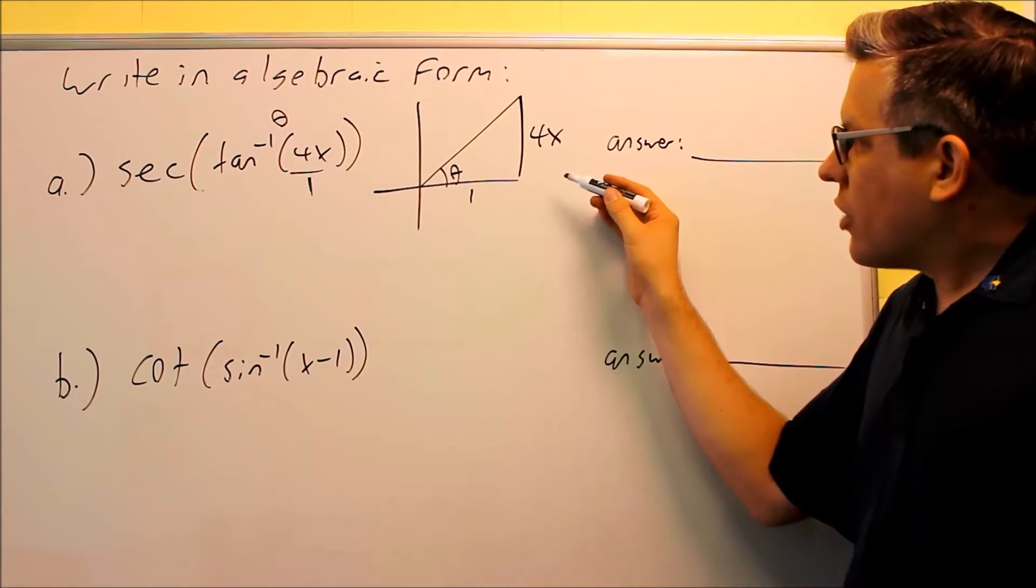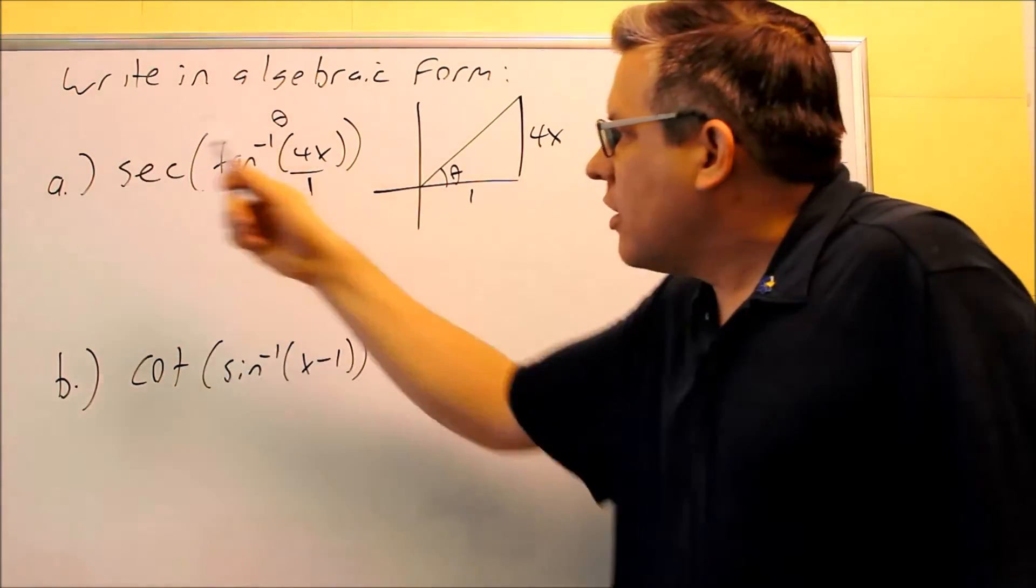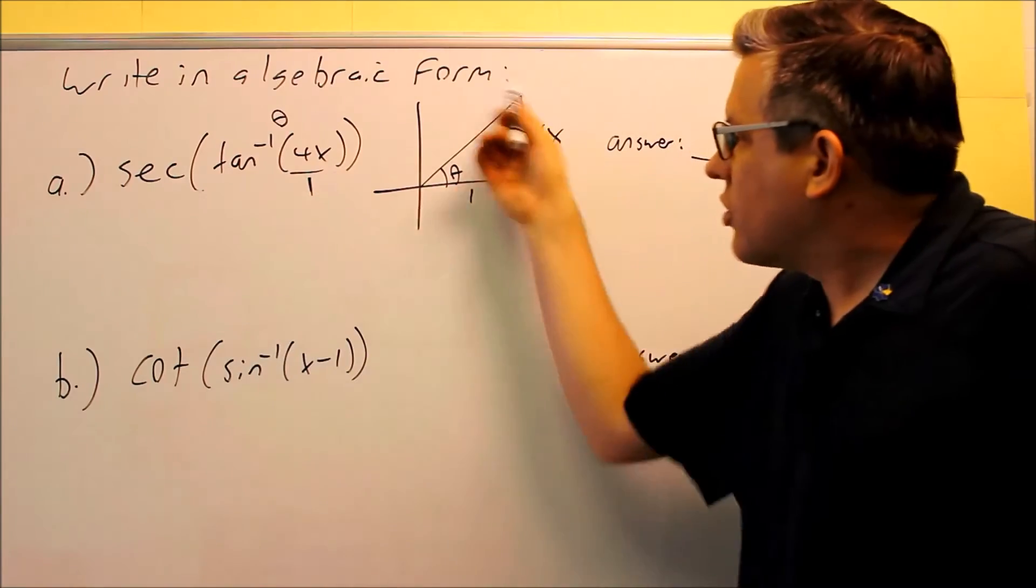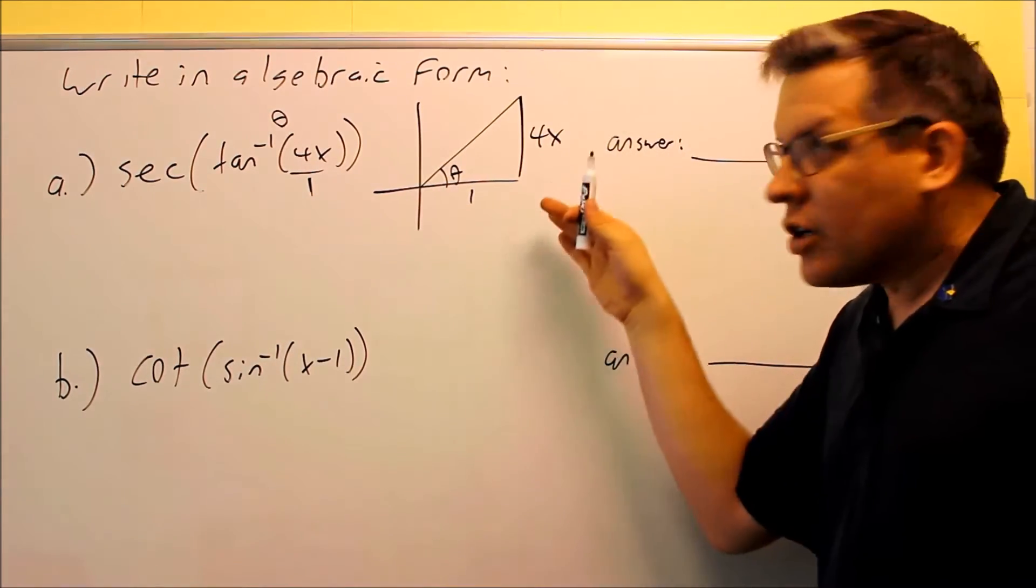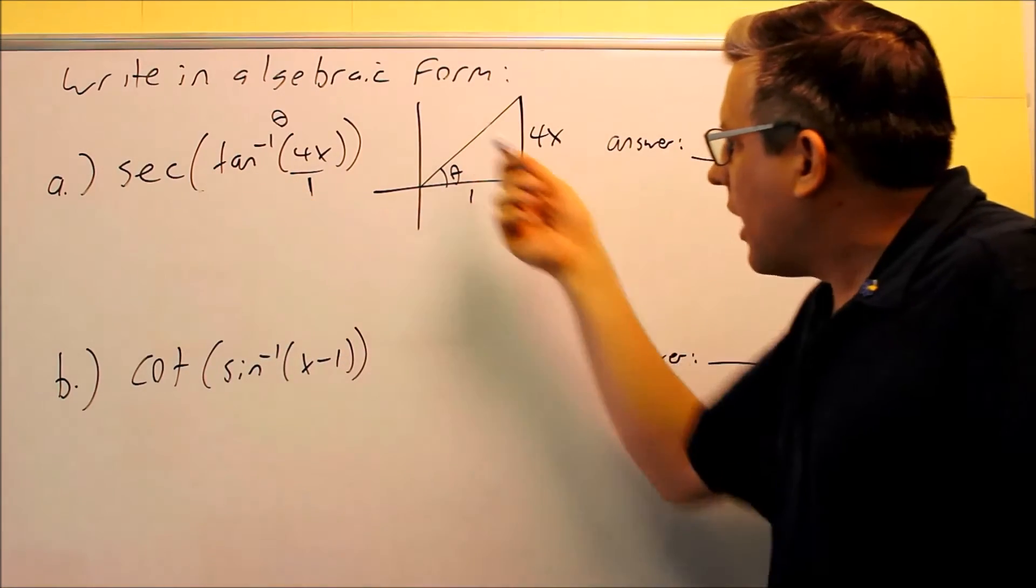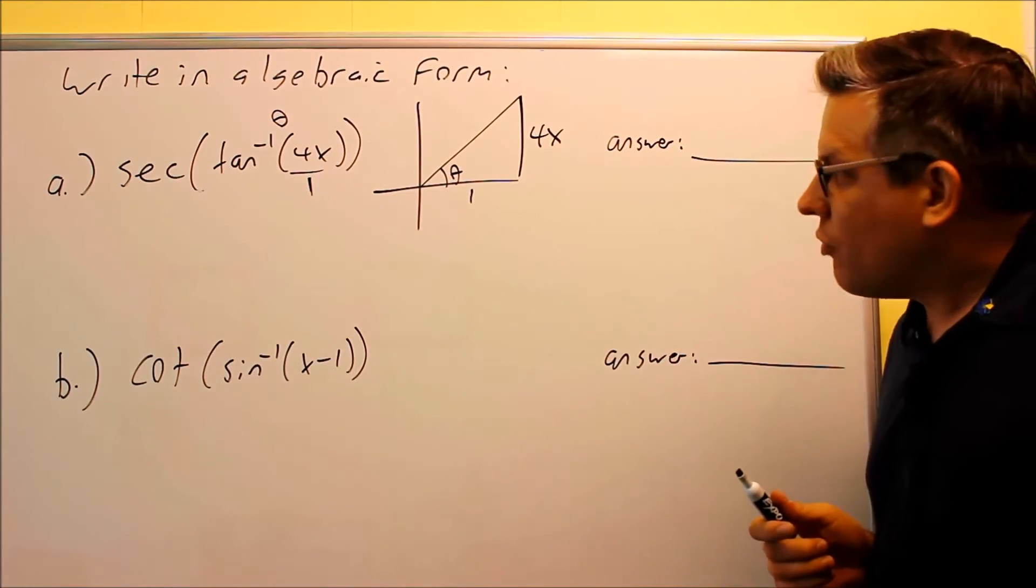So in order to answer this question, we have to find all three sides because the one on the outside, that's going to tell you how you're going to write your answer. So secant, once the triangle is all drawn, we're going to use our definition for secant in order to get our answer. Now secant involves hypotenuse over adjacent, so that's why we have to find the hypotenuse before we get our answer.